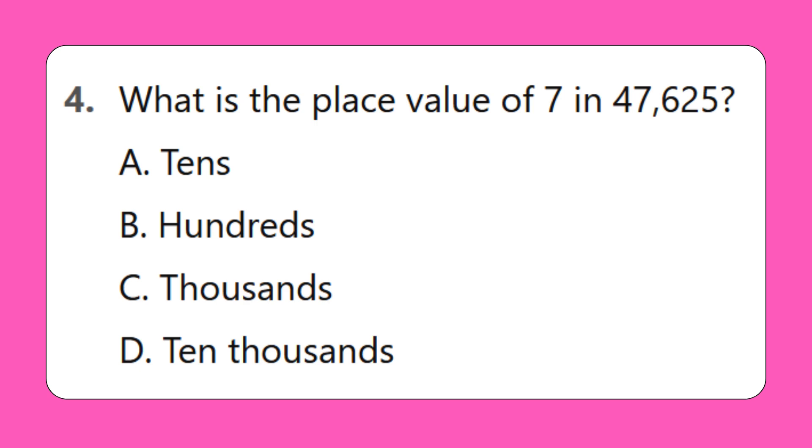4. What is the place value of 7 in 47,625? A. 10s, B. 100s, C. 1000s, D. 10,000s.